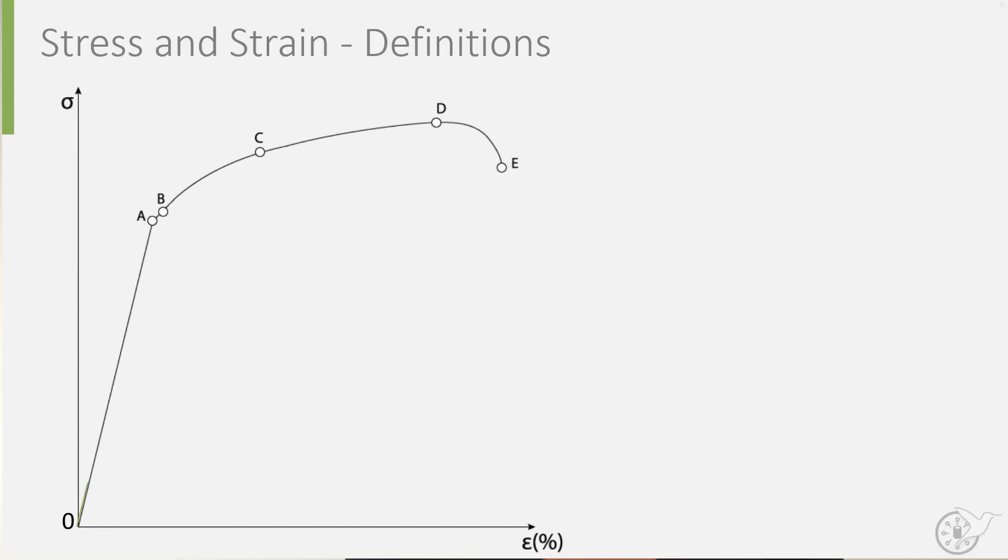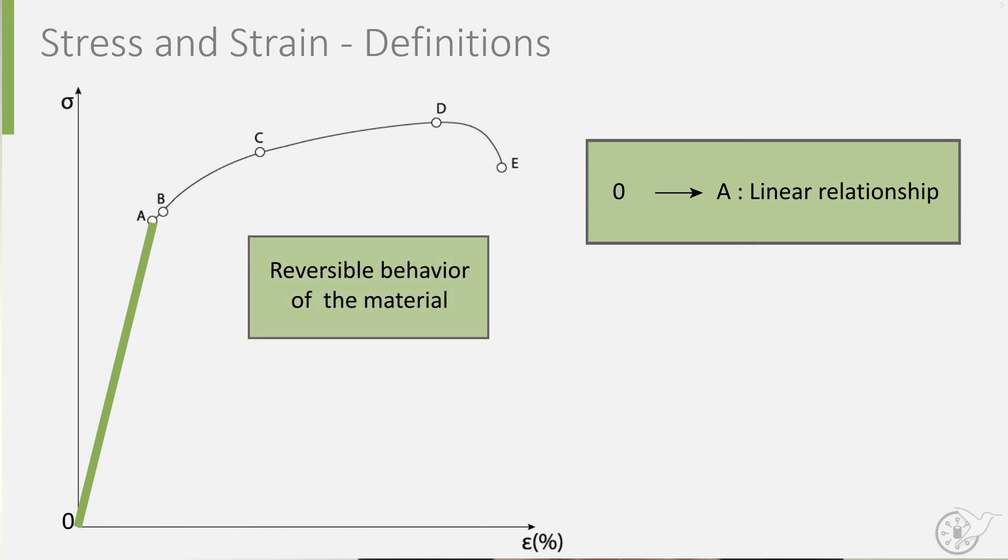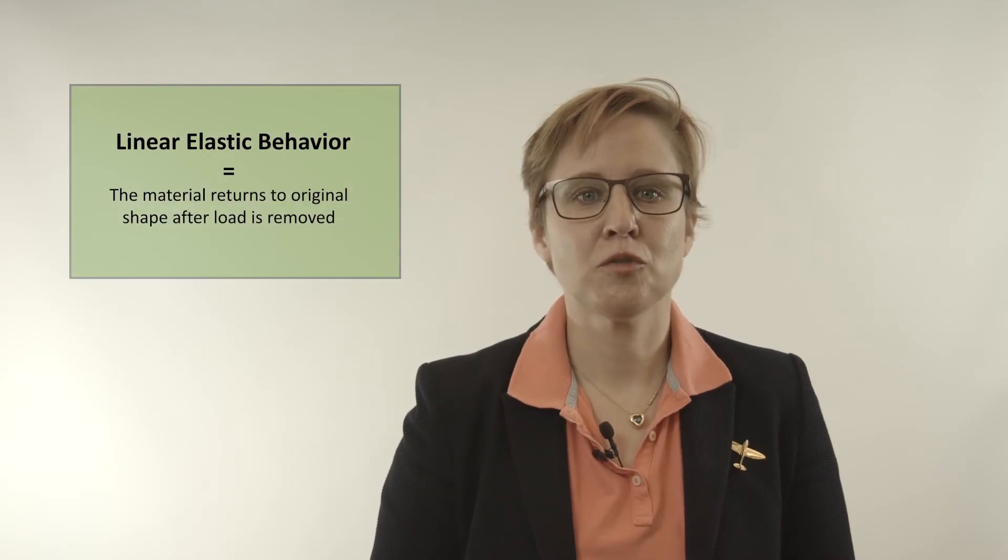Let us take a closer look at this stress strain diagram. If we look at the first part, from the origin O to point A, we can recognize the linear relationship we found earlier in our load elongation diagrams. This represents, similar to springs, the reversible behavior of a material. This is referred to as linear elastic behavior, which means that if the load is removed, the material will return to its original shape.